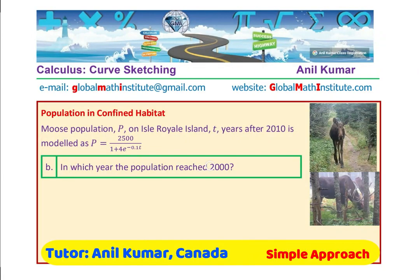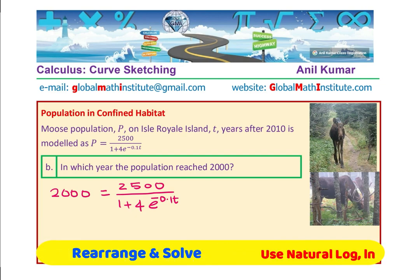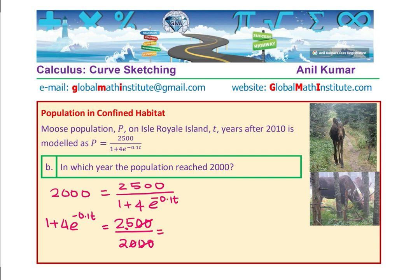In which year did the population reach 2000? In 2010 there were only 500, so when did they reach 2000? In the formula, p becomes 2000, and we need to find t. So: 2000 = 2500 / (1 + 4e^(−0.1t)). Cross-multiplying: (1 + 4e^(−0.1t)) = 2500/2000 = 1.25.